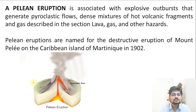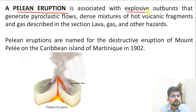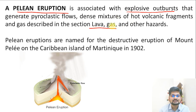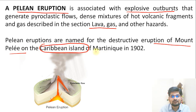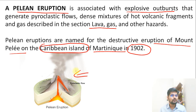The fifth type is Pelean eruption, associated with explosive outbursts. It is more hazardous than the others, with lots of lava and gaseous material. Pelean eruptions are named after the disruptive eruption of Mount Pelée on the Caribbean island of Martinique in 1902, which produced pyroclastic flows — dense mixtures of hot volcanic fragments and gases.